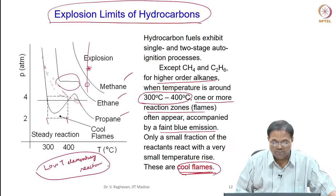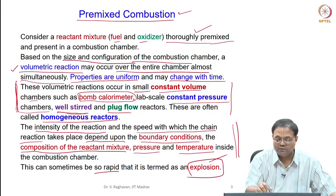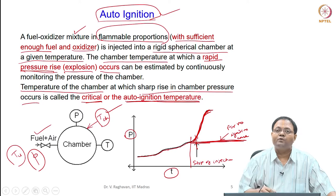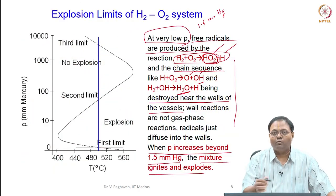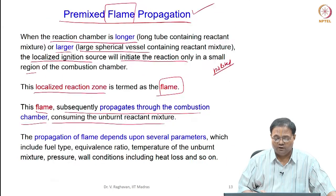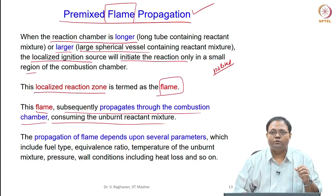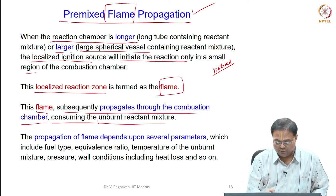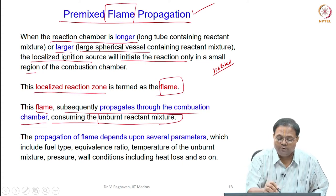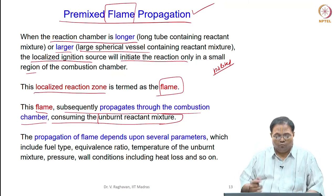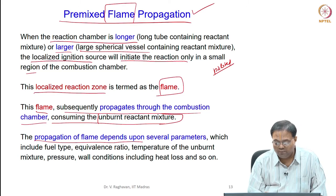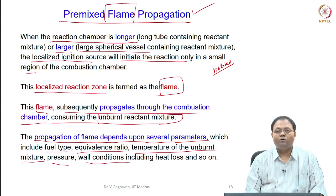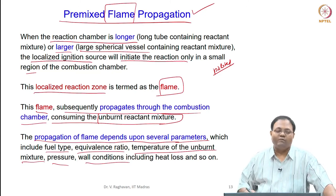A candle is the fuel available and air is available everywhere, but only at a particular point it is burning - that is the flame. Only a localized combustion zone is identifiable; that we call a flame, and this flame subsequently propagates through the combustion chamber consuming the unburned reactant mixture. The difference from the previous cases is that we were talking about homogeneous reactors with premixed combustion occurring all over, and auto ignition where only chemical kinetics is important. Now we are seeing localized flame formation with important parameters: fuel type, equivalence ratio, temperature of unburnt mixture, pressure, and wall boundary conditions.